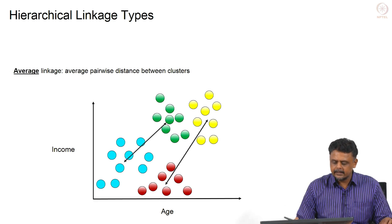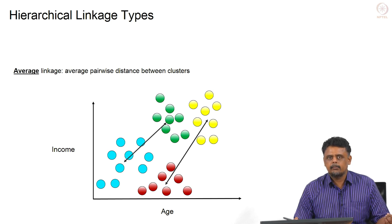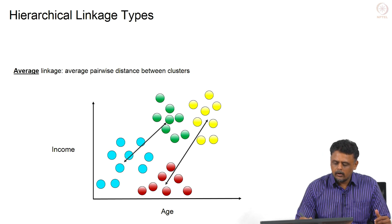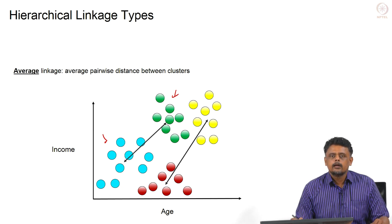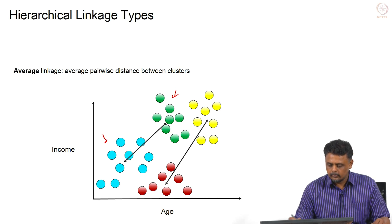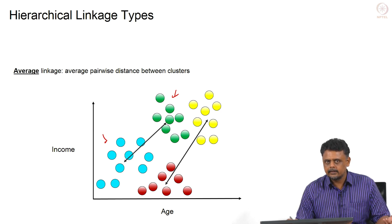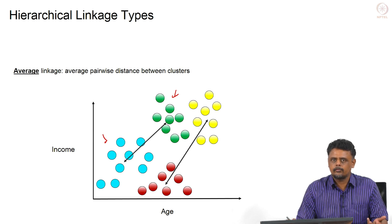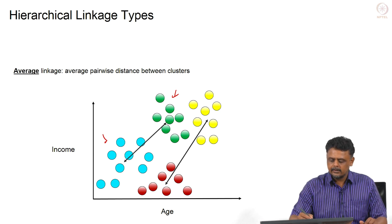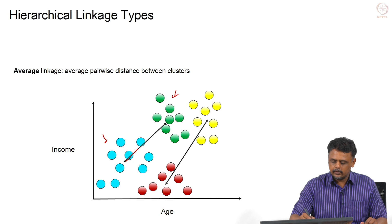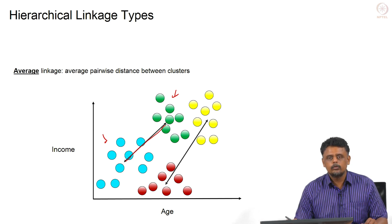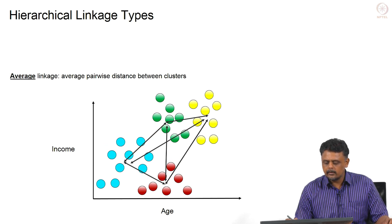Average linkage uses the average of the pairwise distances between elements across clusters. We take all elements of cluster 1 and all elements of cluster 2, calculate the distance between all pairs taking one from each cluster, and then take the average of all those distances as the dissimilarity metric. In the illustration, the arrow represents the average distance between the green and blue cluster, and similarly between the red and yellow clusters.